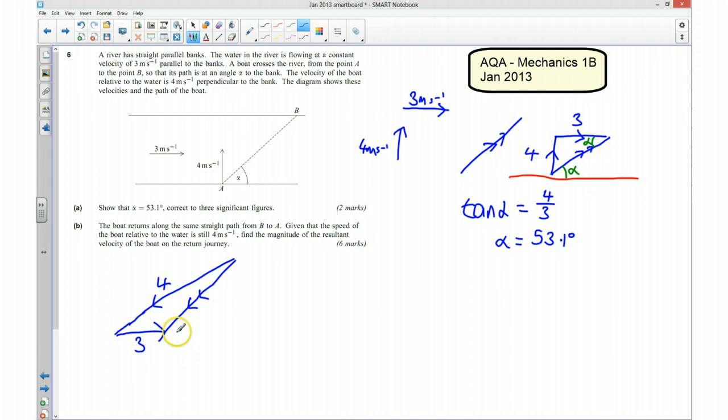I also know an angle, because I know that this angle here with the bank, I've worked that out before, alpha is 53.1 degrees, which means over here we're going to get an angle that's going to be 180 take away 53.1 degrees. So that there is going to be 126.9 degrees.